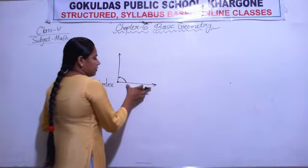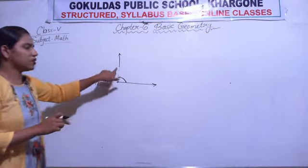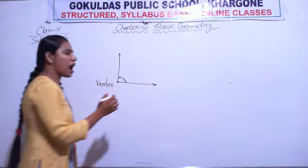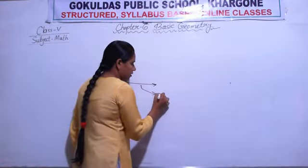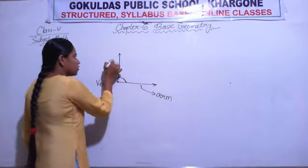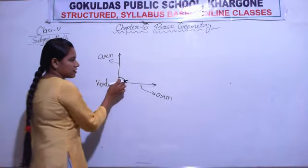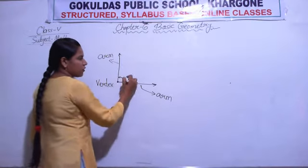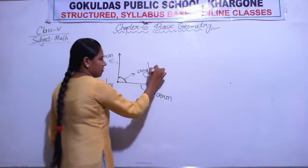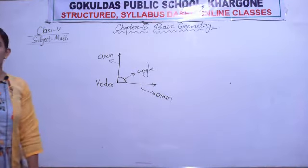The two rays are known as the arms of the angle — arm one and arm two. This space between the two arms is known as the angle.